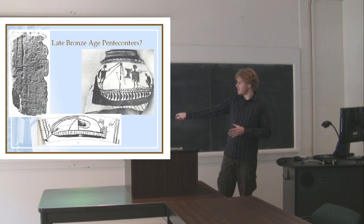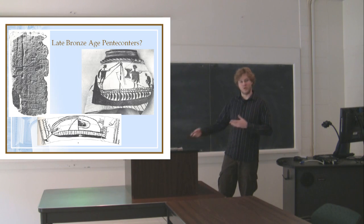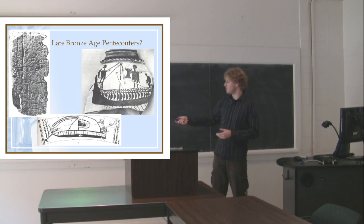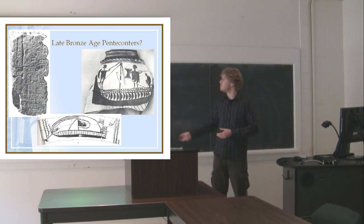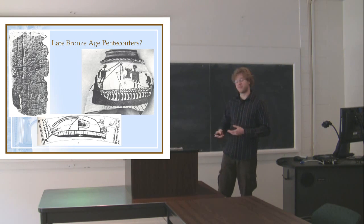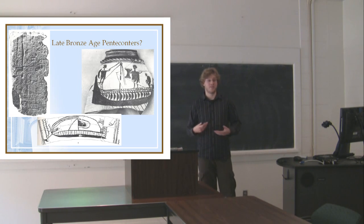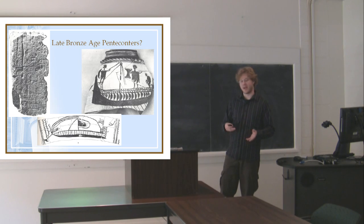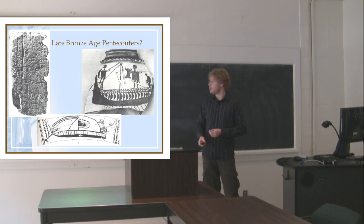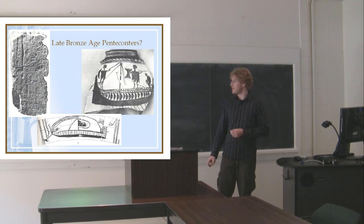The question is whether these are stanchions or thwarts. Whichever the case, if they're thwarts or stanchions, it would still indicate that we're looking at 25 people sitting in this boat. The evidence, as far as iconography goes, suggests that pentacontremes show up somewhere between the 12th and 11th century, perhaps as early as the 14th century BC. This is the best evidence we have and it dates to about that period.